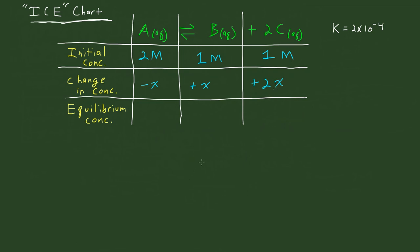The equilibrium concentration is just the initial concentration plus or minus the change. So the equilibrium concentration of A is 2 minus X, B is 1 plus X, and C is 1 plus 2X.